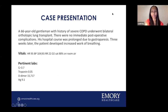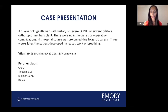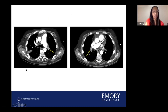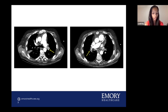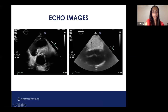This is a 66-year-old gentleman with a history of severe COPD who underwent a bilateral orthotopic lung transplant. There were no immediate post-op complications, but his hospital course was prolonged due to gastroparesis. Three weeks later, the patient developed increased work of breathing. He was tachypneic to 22 respirations per minute. He desaturated to 88% on room air. Chest X-ray was unremarkable. Significant lab values included a normal creatinine, a borderline elevated troponin, hemoglobin of 9, and a D-dimer above 15,000.